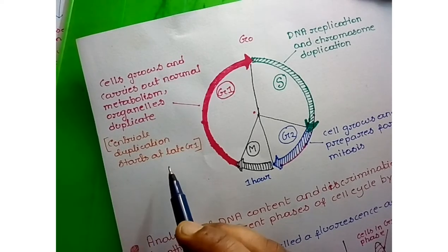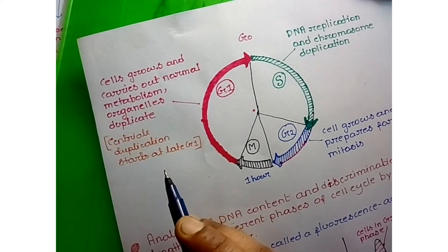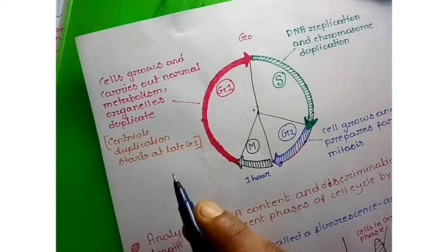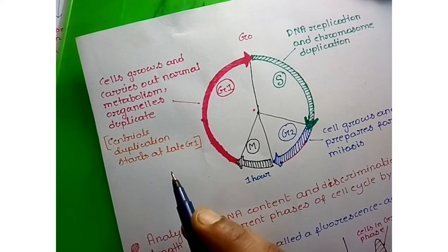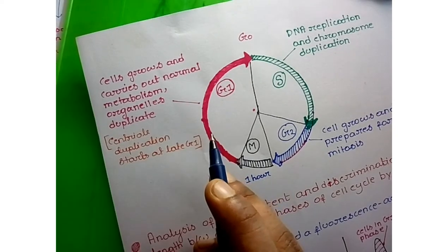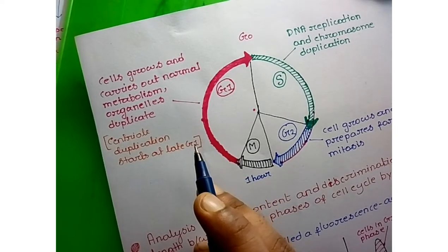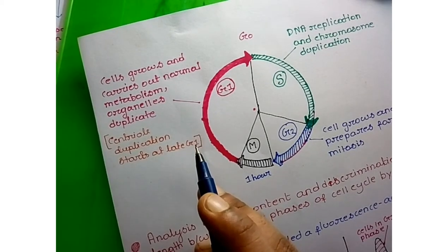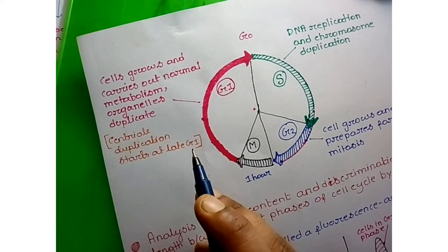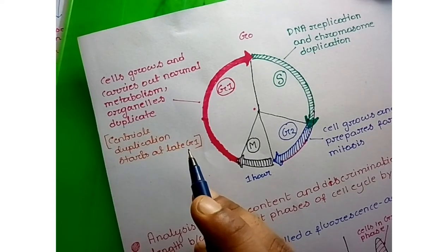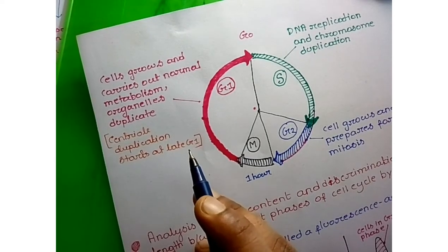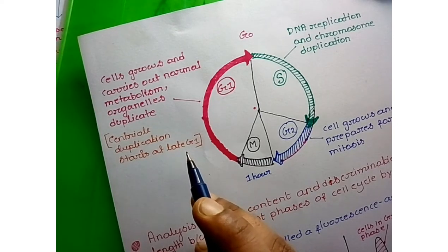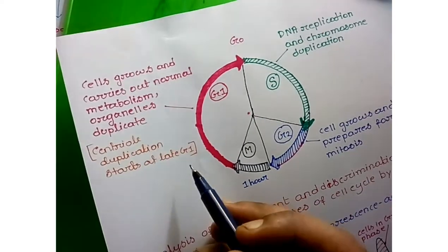Duplication of the centriole is very important. The centriole plays a critical role in metaphase and anaphase because it helps in the formation of the spindle apparatus, through which chromosomes move toward the equatorial region and ultimately reach each pole of the cell, allowing daughter cells to form.